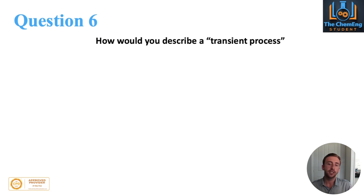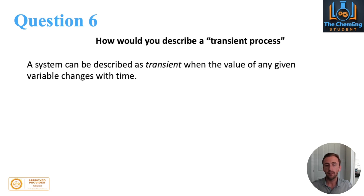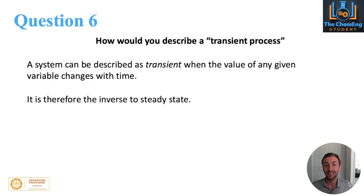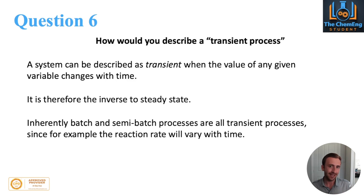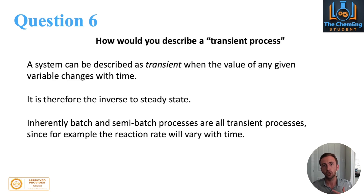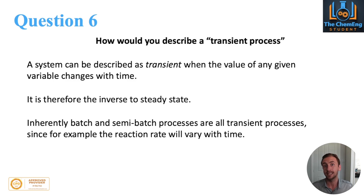Question number seven is: how would you describe a transient process? A transient process is one in which the value of any given variable will change with respect to time — it's the inverse to a steady state system. That means inherently things like batch and semi-batch processes are all transient processes, because the rate of the reaction and the concentrations of reactants and products will vary with respect to time. You could not assume steady state conditions for these.